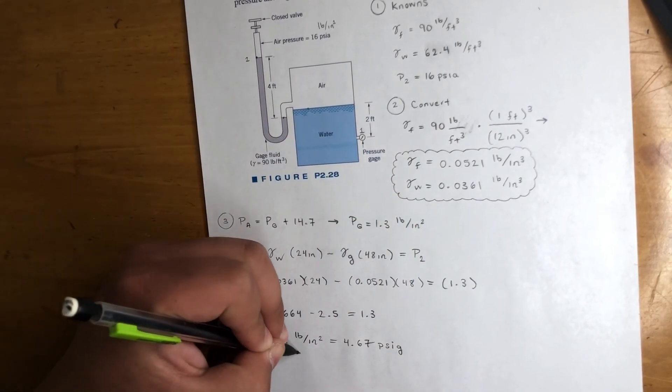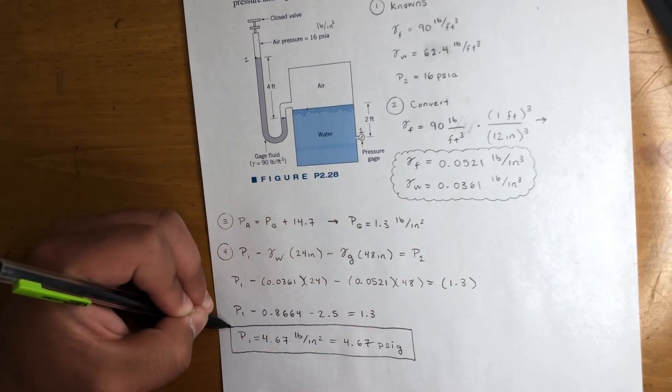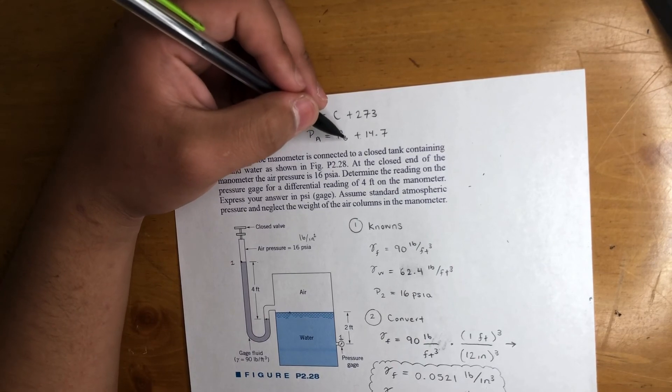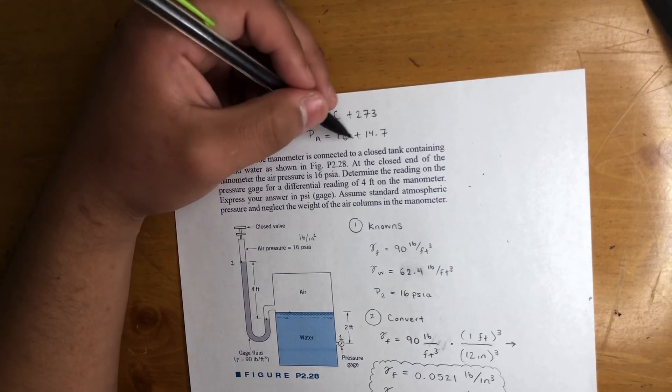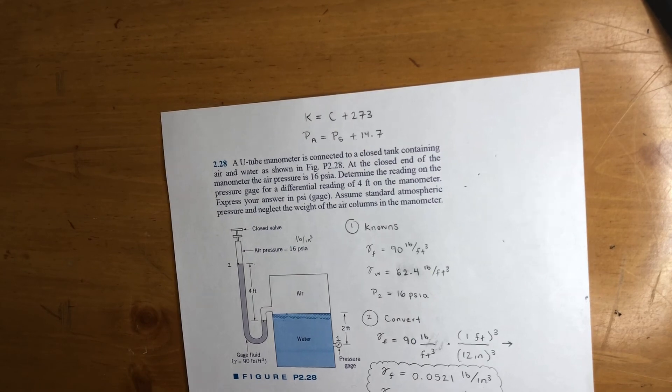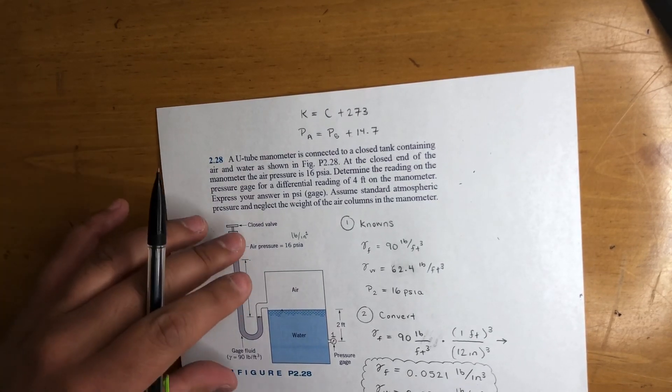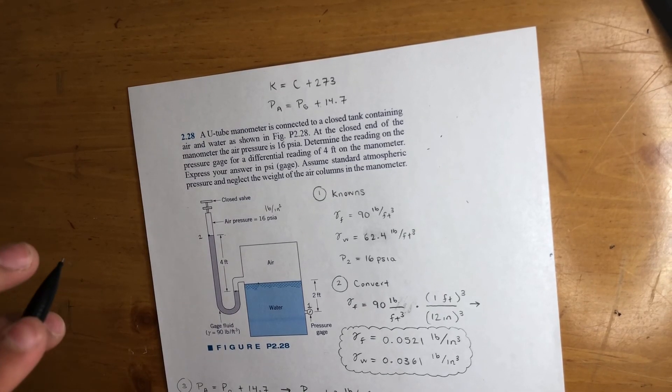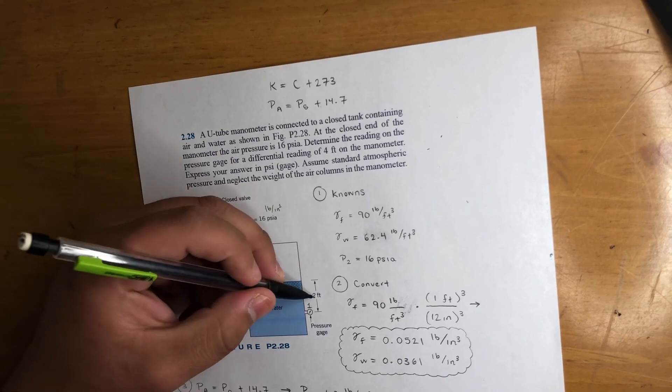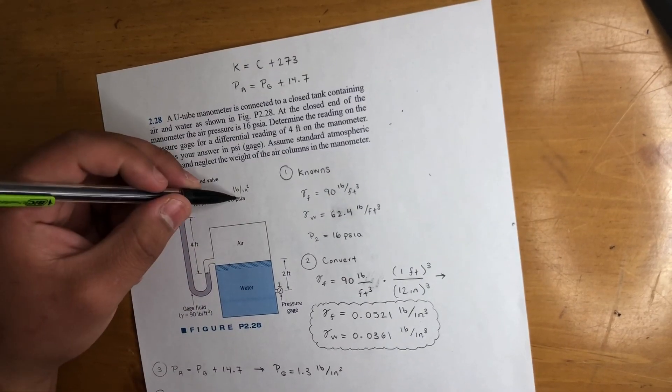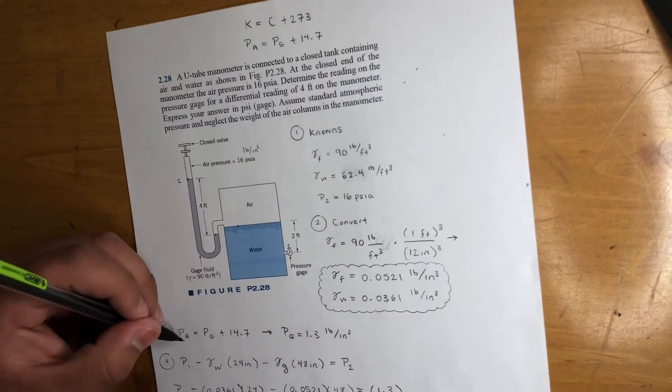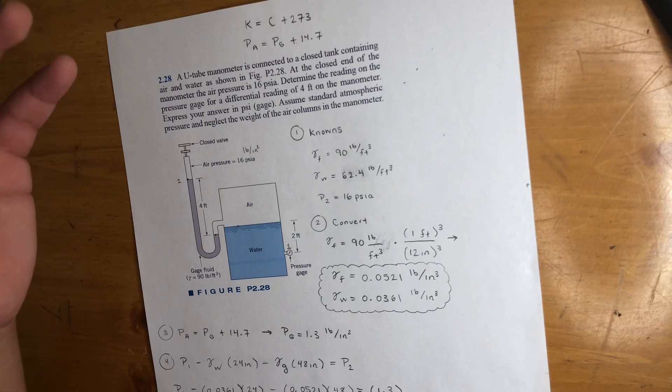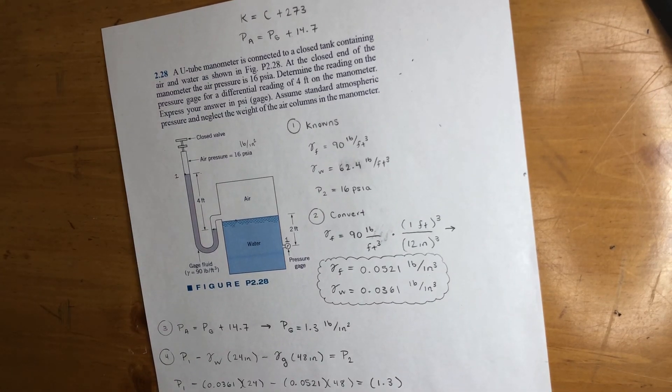And that pretty much sums up this one. Something to take away on this one is the formula, right? You want to know how to convert gauge to absolute and vice versa. It's just a simple formula like this, but it's easy to forget—I know I used to forget it every here and there, so just make sure you know that. And then also, the main takeaway in these problems is, like I told you, make sure all your units are the same once you start doing the formula, because this will mess you up. So that's how the exams try to trick you. But yeah, other than that, that's pretty much it.